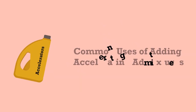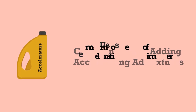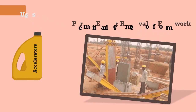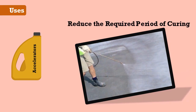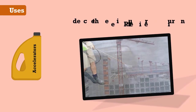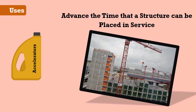Some of the common uses of adding accelerating admixtures are: permit earlier removal of formwork, reduce the required period of curing, and advance the time that a structure can be placed in service.